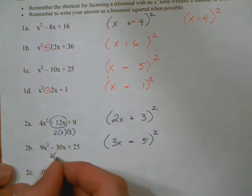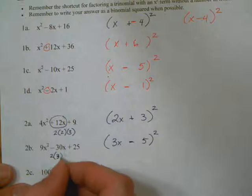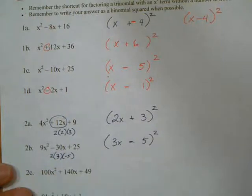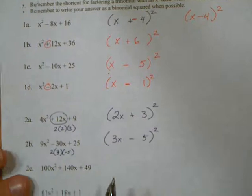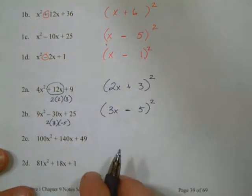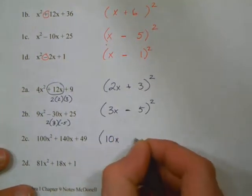Look at our next one. 3x and 5. The middle is a minus. So 2 times 3 times negative 5 is negative 30. So that works.